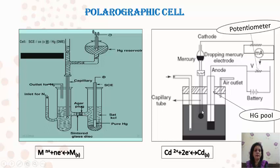The polarographic cell is an H-shaped cell which can be dipped in a beaker of salt solution. The mercury reservoir where the dropping mercury electrode comes in contact with the salt solution, and the saturated calomel electrode acting as an anode, are connected with a potentiometer. In the H-shaped cell, you can pass N2 gas through the capillary to remove dissolved oxygen from the solution before starting the experiment.